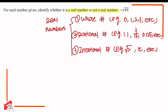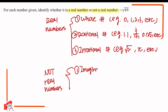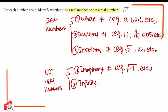For numbers which are not real numbers, there will be two classifications. The first one is imaginary numbers — for example, the square root of minus 1. This is an imaginary number and it is not a real number. The second one is infinity. Infinities are not real numbers.